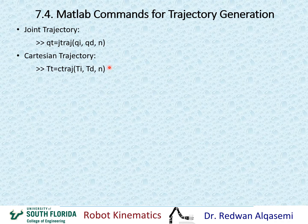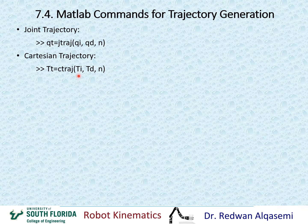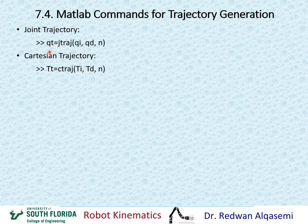The second command is the Cartesian trajectory. In this case, we don't deal with joints — we deal with Cartesian coordinates. This command is CTRAJ. The input is TInitial, TDesired, and the number of steps or via points. TInitial is the transformation matrix at the beginning of the trajectory, and TDesired is the transformation matrix at the end. QT gives a stack of joint angles, and the T-trajectory gives a stack of Cartesian transformation matrices stacked on top of each other.